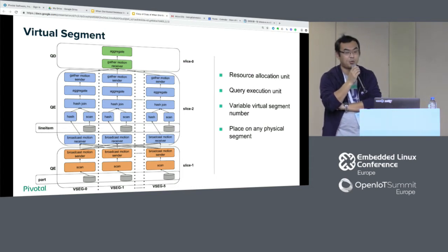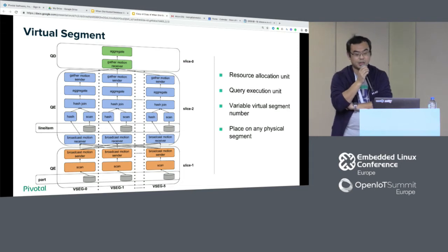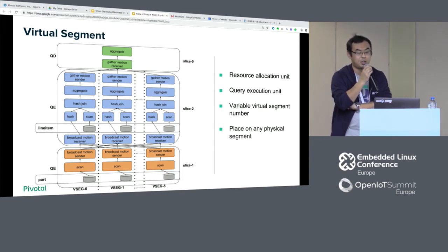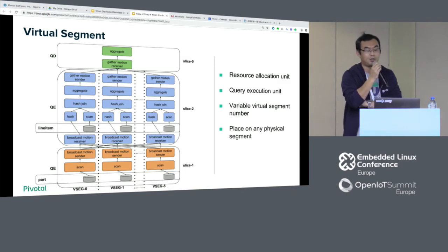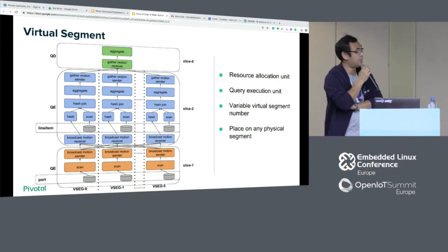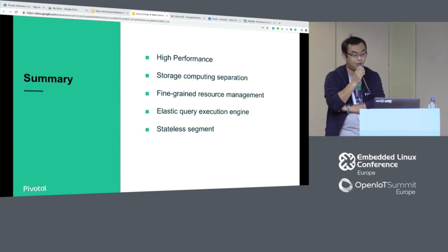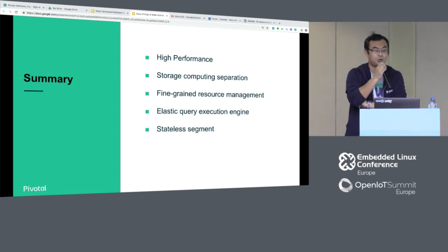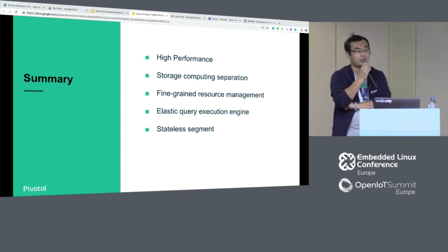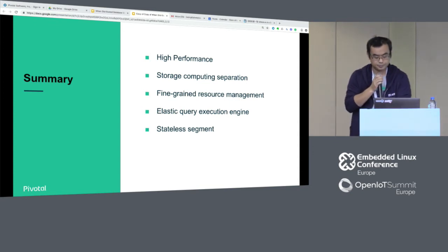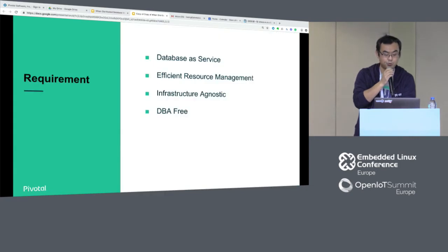In summary, a virtual segment is a resource allocation unit — it's somewhat like a container, but also a logical concept. A virtual segment is also a segment for execution. Physically, you can determine it based on the complexity of the database and the physical segment. Apache HAWQ has high performance, and because of this parallel, separated system it is more flexible and elastic, with an elastic query execution engine with a stateless segment design. With those features, we can use HAWQ to transfer the traditional database into a cloud database.